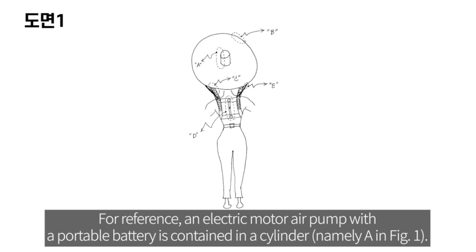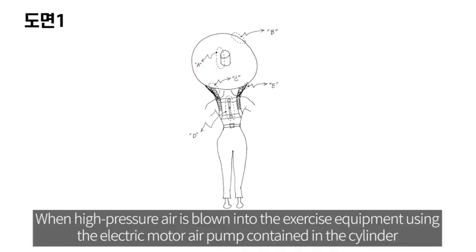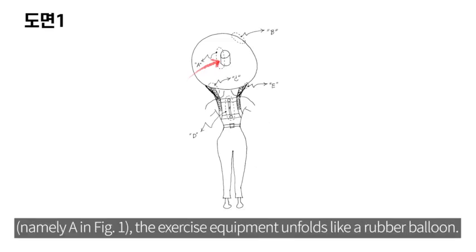For reference, an electric motor air pump with a portable battery is contained in a cylinder, namely A in Figure 1. When high pressure air is blown into the exercise equipment using the electric motor air pump contained in the cylinder, namely A in Figure 1, the exercise equipment unfolds like a rubber balloon.